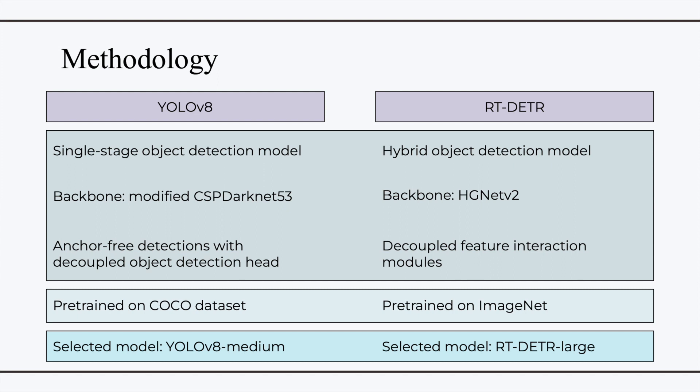Here is a quick overview of the model architectures of YOLO V8 and RTDTR. YOLO V8 is a single-stage object detection model that uses the modified CSP DarkNet-53 backbone, pre-trained on the COCO dataset. It is also capable of performing anchor-free detections with a decoupled object detection head. Meanwhile, RTDTR is a hybrid object detection model that uses a HGNET V2 backbone, pre-trained on ImageNet. Its coupled feature interaction modules boost efficiency. The selected model configurations used were YOLO V8 medium and RTDTR large.